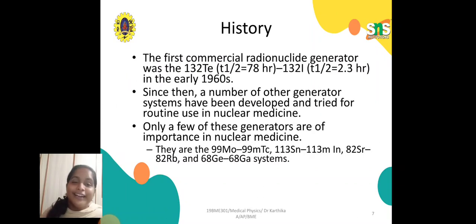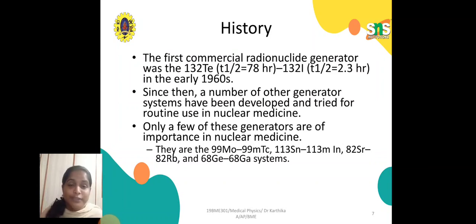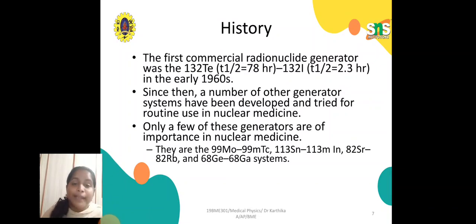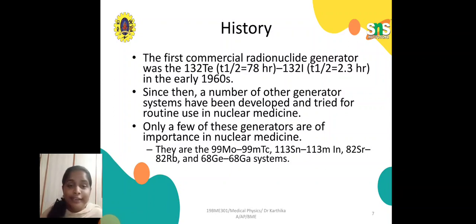Regarding the history of radionuclide generators, the first commercial radionuclide generator was the technetium-132 generator in the early 1960s. Since then, a number of other generator systems have been developed and tried for routine use in nuclear medicine, but the technetium generator remains the most important radionuclide generator.